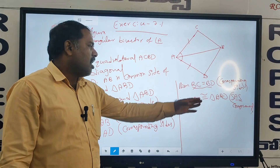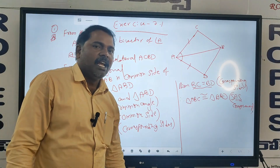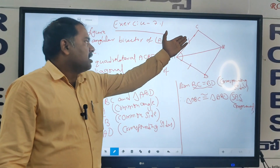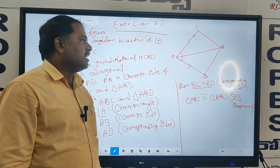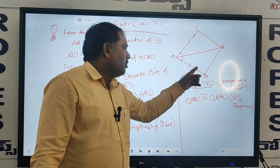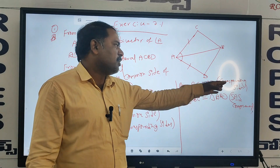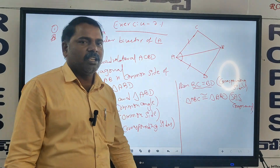Triangle ABC is congruent to ABD. The third side is equal — BC is equal to BD. So this is the BC about BD: this is the corresponding side of triangle ABC and triangle ABD. This is the proof for that problem.